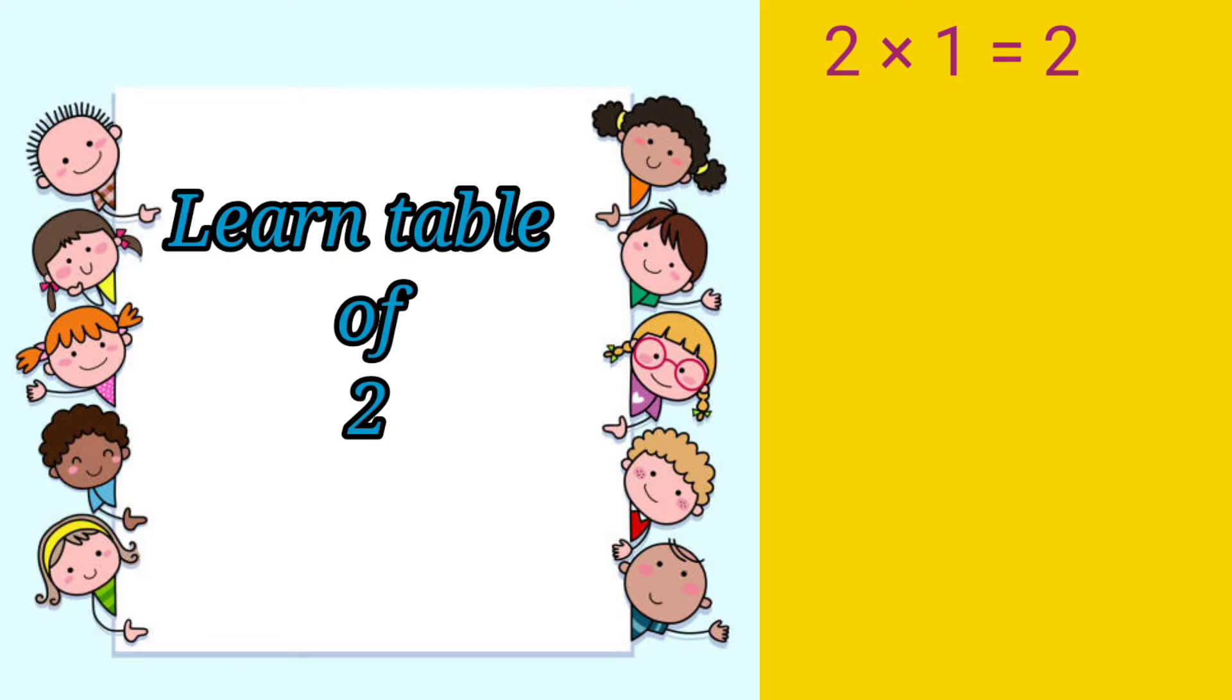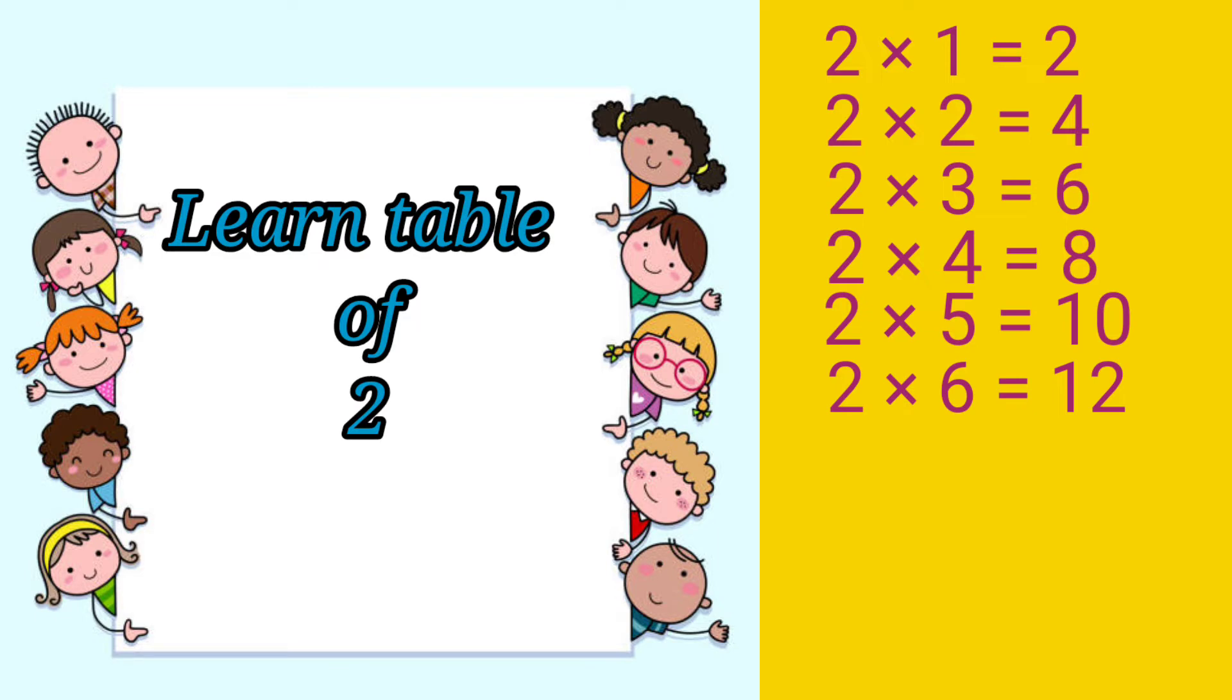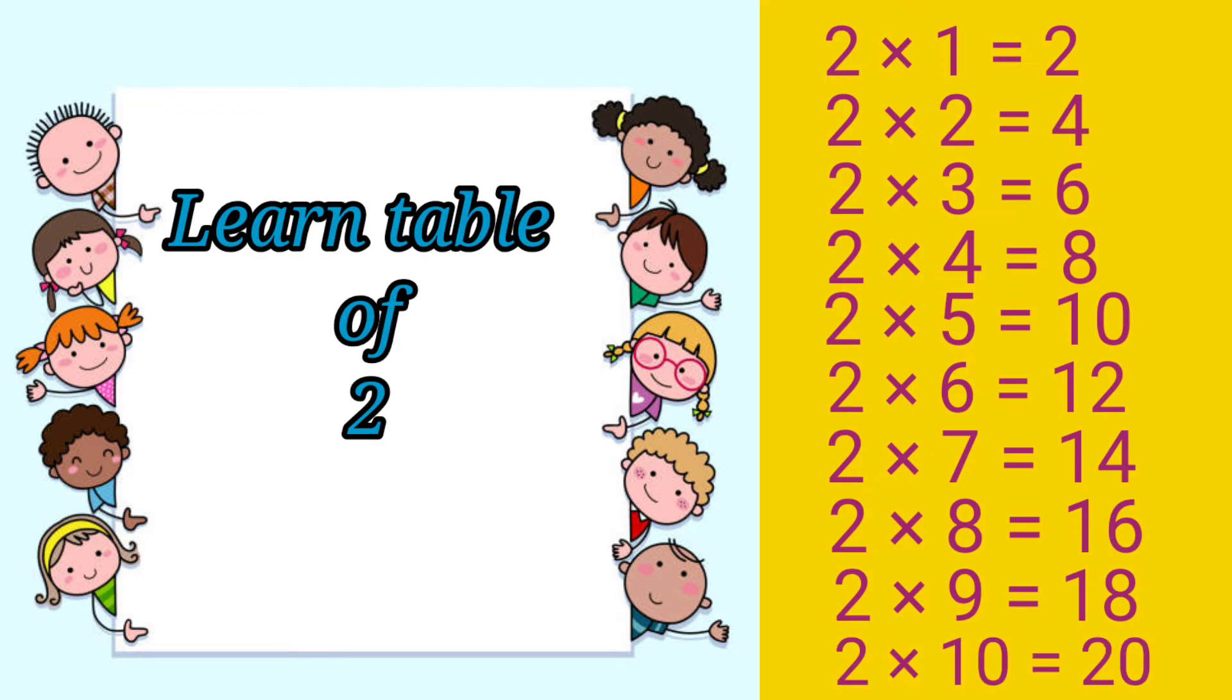Learn table of 2. 2 1s are 2. 2 2s are 4. 2 3s are 6. 2 4s are 8. 2 5s are 10. 2 6s are 12. 2 7s are 14. 2 8s are 16. 2 9s are 18. 2 10s are 20.